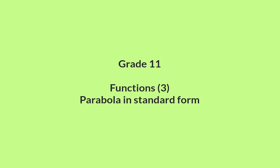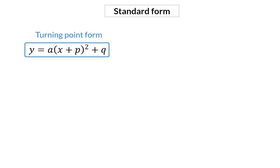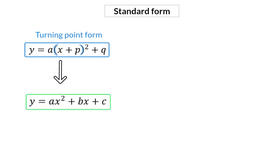In this video, we're going to have a look at the parabola in standard form. In the previous video, we had a look at the equation of the parabola given in turning point form. In that equation, there's a bracket that can still be multiplied out and then simplified. If we do this simplification, you will form a trinomial, which is then the standard form equation for the parabola.